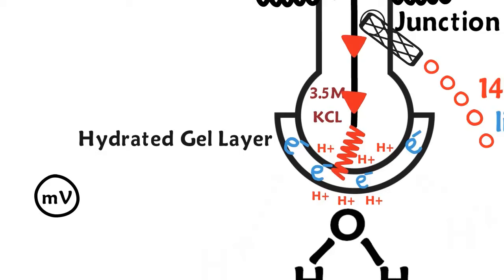If more hydrogen ions are attached to the gel layer than are inside the glass bulb, this will create a low pH value called an acid.